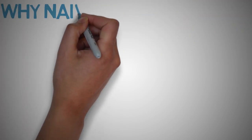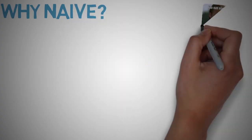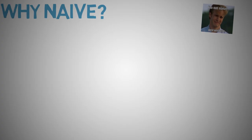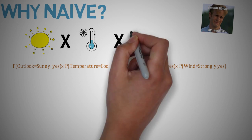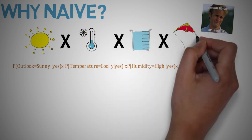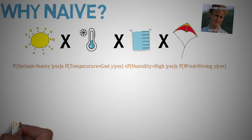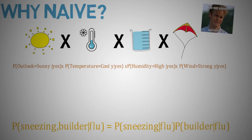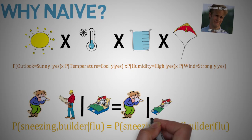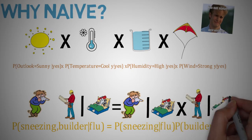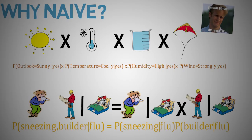So why naive? Probability theory says if several factors don't depend on each other in any way, the probability of seeing them together is just the product of their probabilities. So in our example, we have P(outlook=sunny | yes) × P(temperature=cool | yes) × P(humidity=high | yes) × P(wind=strong | yes). Or looking at another example, we can assume that sneezing has no impact on whether you are a bowler. So the probability of sneezing and being a bowler given you got the flu equals P(sneezing | flu) × P(bowler | flu). The probability of a sneezing bowler having flu must depend on the chances of this combination of attributes indicating flu.